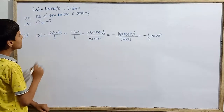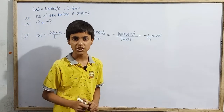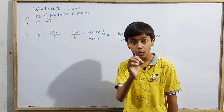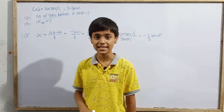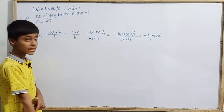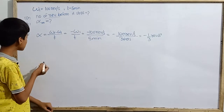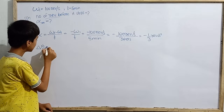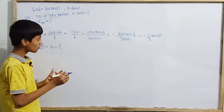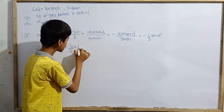Now, the number of revolutions before it stops is essentially the angular displacement — the change in angular position. Just as number of meters corresponds to displacement in linear motion, number of revolutions is the angular displacement. So we want Δθ — the angular displacement in revolutions before it stops. Δθ = ω_i · t + ½ · α · t².